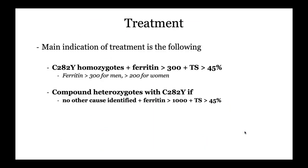The indications for treatment: if you have a homozygous C282Y and a ferritin level above 300 for men or 200 for women, and a T-sat above 45%, you may start treatment. Another indication is compound heterozygotes — only if other causes are not identified for liver injury and ferritin is above 1,000 and T-sat is above 45%.